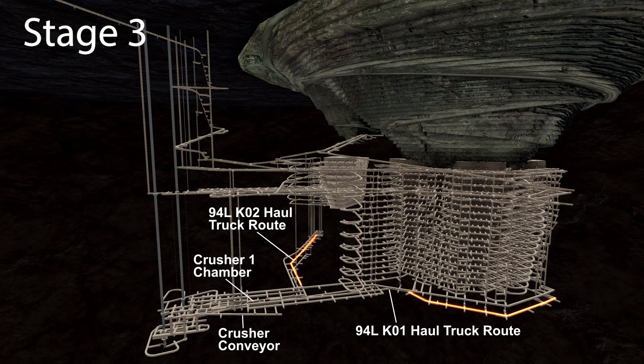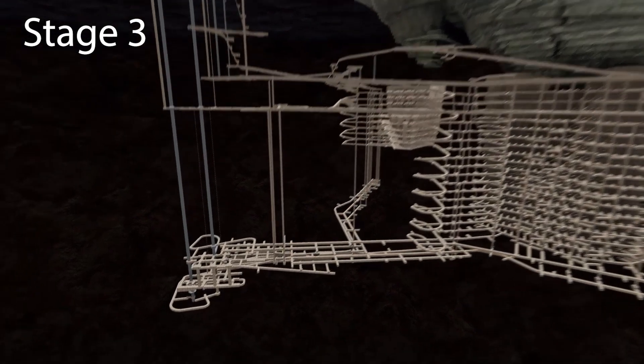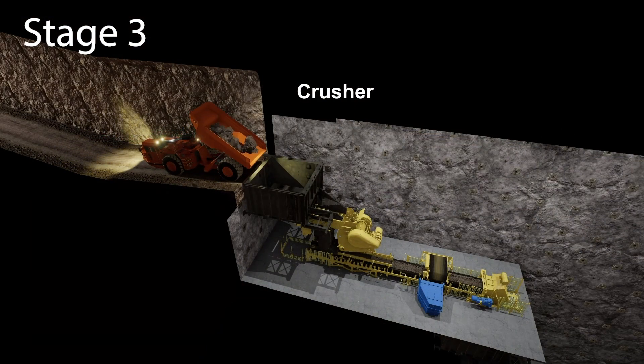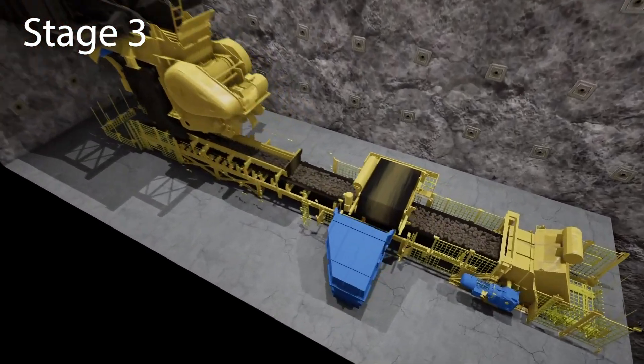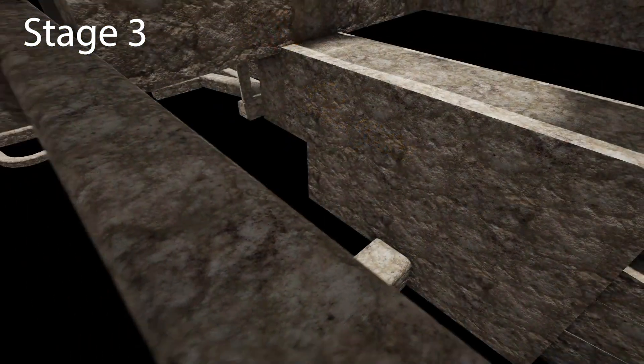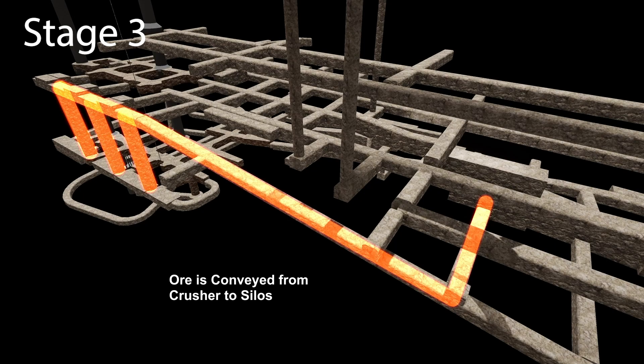Service shaft and K02 ore body fully commissioned and online. The K01 prioritization plan reaches maturity. Ore will be tipped into passes from K01 and K02 and along the 94L autonomous haulage will transfer the ore to crushers before it is hoisted to surface.